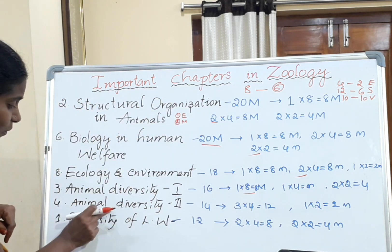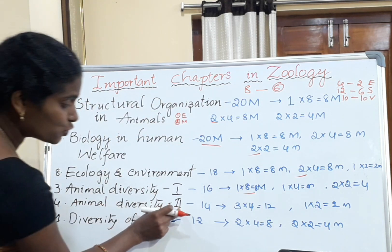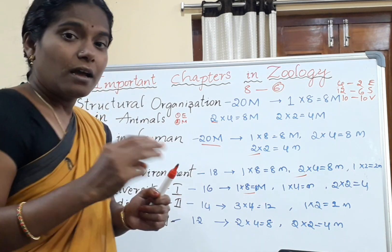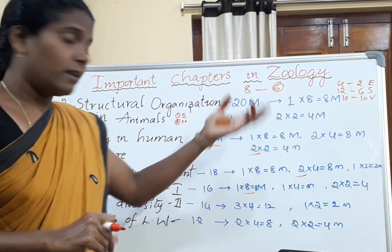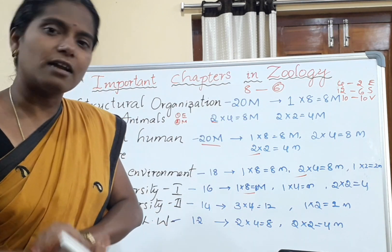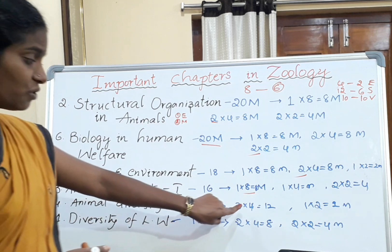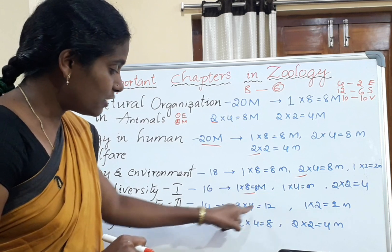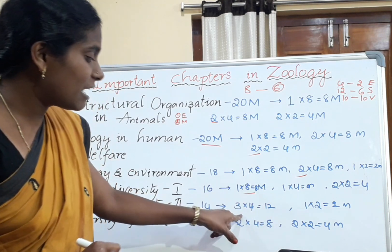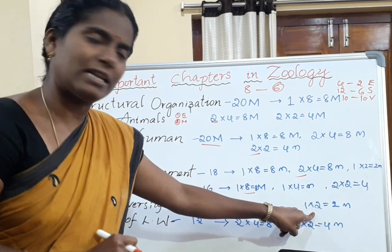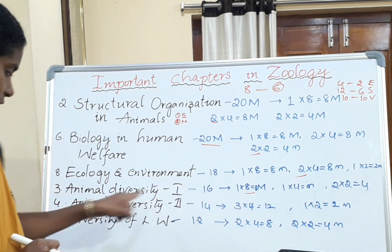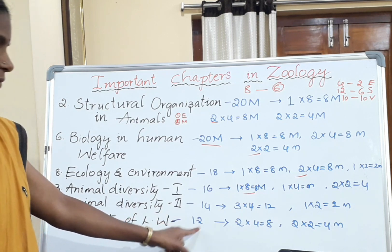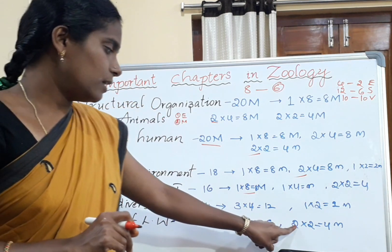Chapter 4, Animal Diversity, is very, very important. From that chapter, three short answers will come. Three short answers times four marks each equals twelve marks. Attempt those three from Chapter 4. Also, one very short answer comes from it, giving fourteen marks total from Animal Diversity. From Chapter 1, two short answers and two very short answers are expected.